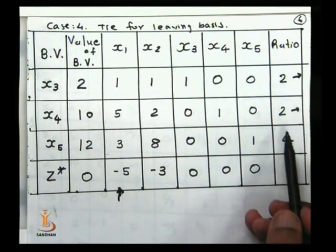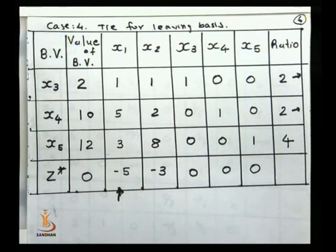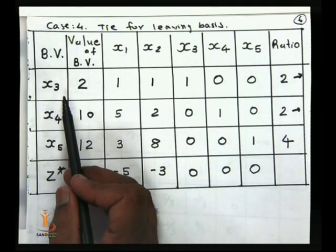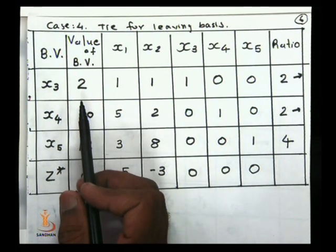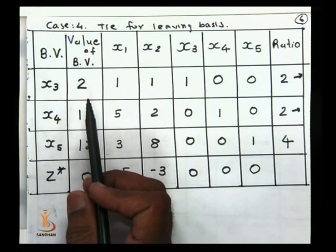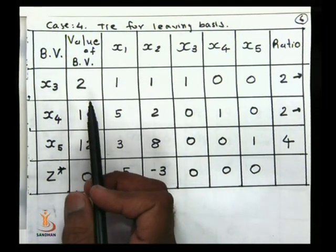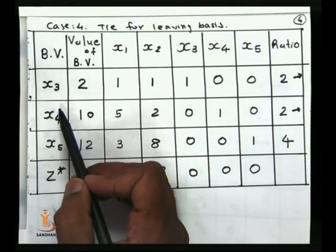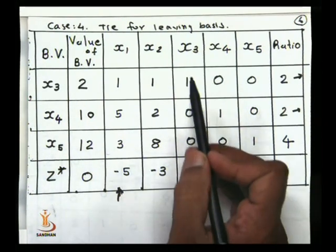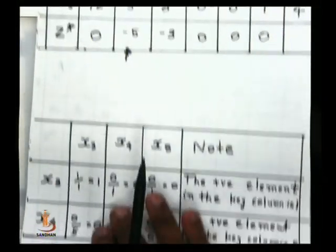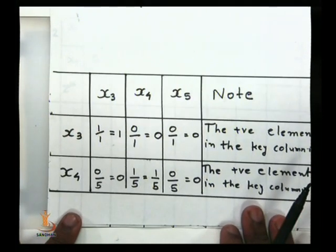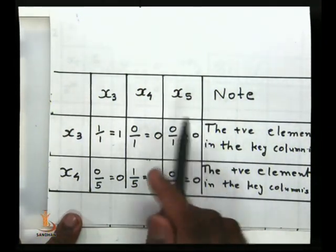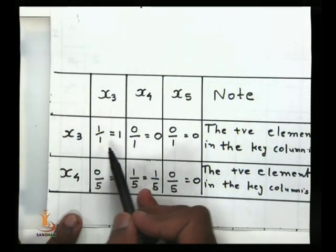Generally when the ratio is smallest positive, we remove that variable. But here there is a tie. To determine which variable should be removed, we apply the Charnes method. Charnes method says that where there is a tie between two rows, we take the basic variable columns - x3, x4, x5 - these three columns.